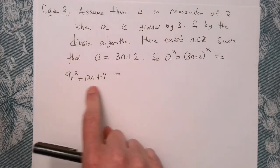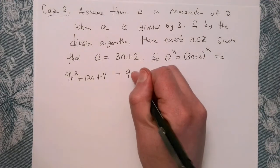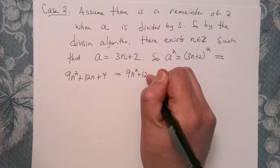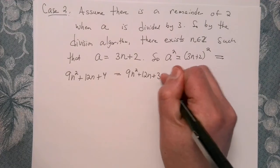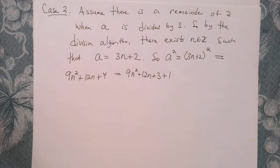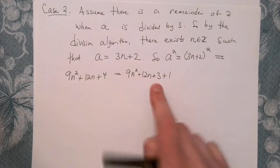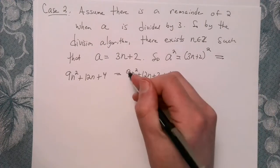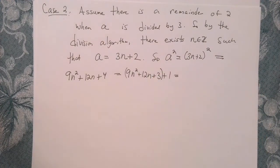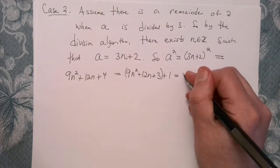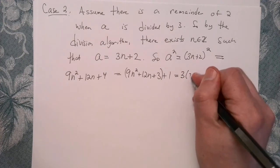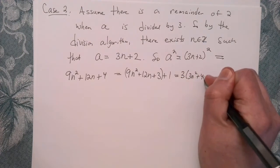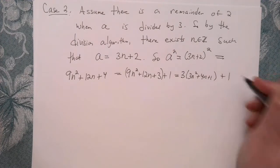But if we're clever, we can rewrite that as 9n squared plus 12n, split up the 4 into plus 3 plus 1. So now we can group together these. We're just using the associative property. And so we can factor out a 3. So that's going to give us 3 times 3n squared plus 4n plus 1 plus 1.